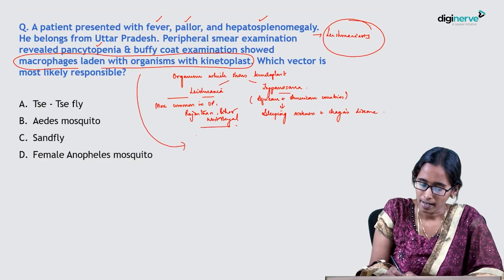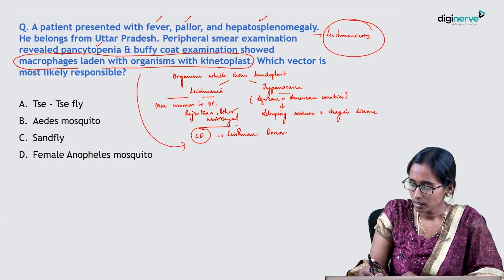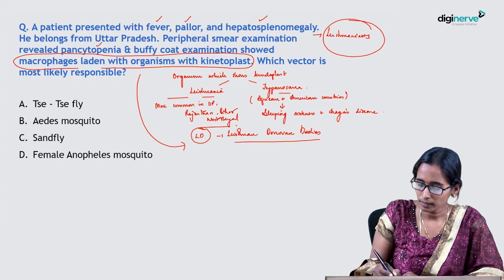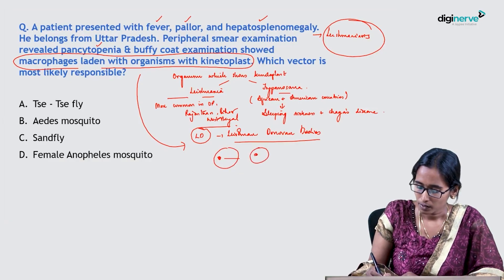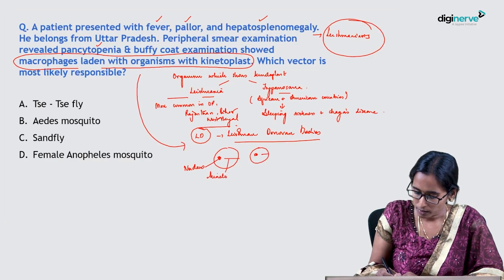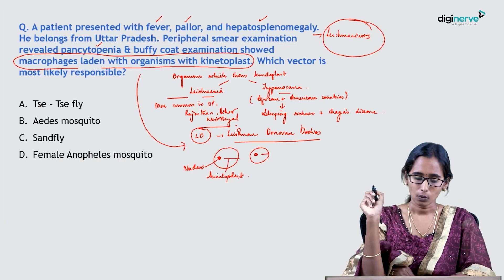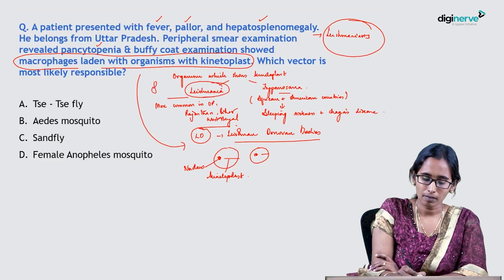The buffy coat examination showed macrophages laden with organism with kinetoplast — these are nothing but LD bodies, that is Leishman-Donovan bodies, which are the amastigote form. The amastigote form will have a nucleus with kinetoplast. So the answer is Leishmania, which is spread by the sand fly.